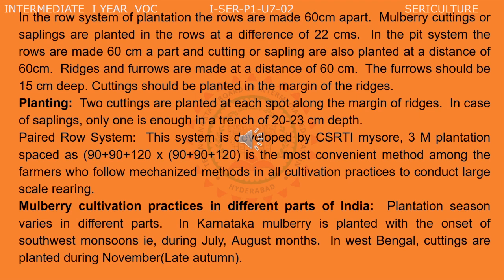Mulberry cultivation practices vary in different parts of India. Planting season varies by region. In Karnataka, mulberry is planted with the onset of southwest monsoons, that is during July-August. In the state of West Bengal, cuttings are planted during November, that is late autumn.